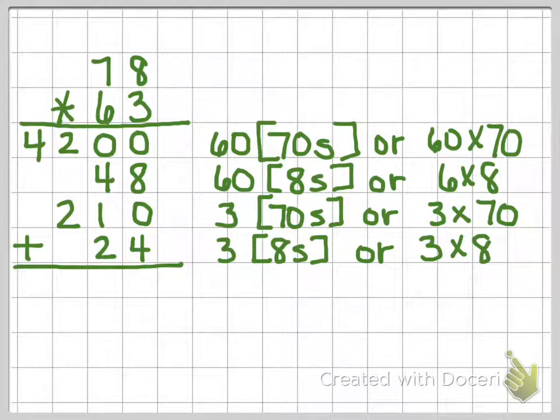We are going to put our line, our addition sign, and we are going to add them up. So 8 and 4 is going to give me 12. Regroup. I've got 1, 4, 1, and 2. That's going to give me 8.